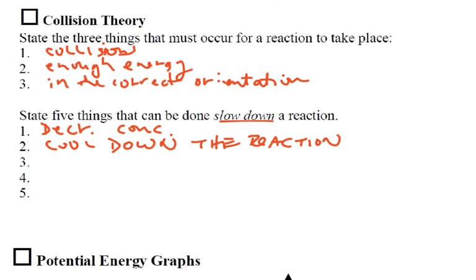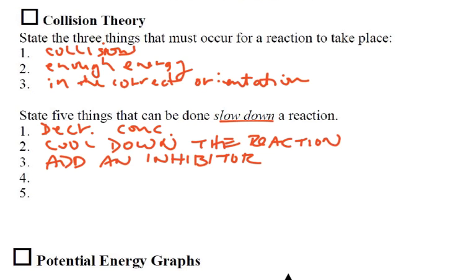A catalyst will speed up a reaction, so the opposite of that is we can add an inhibitor. That's something that actually slows down the reaction — it gets in the way of the normal reaction. Also, we could increase the pressure of a gas to speed up, so here we're going to decrease the pressure of a gas.